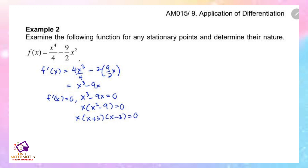So we have three values: x equals 0, x equals negative 3, and x equals 3. We substitute all three of these values into the function.